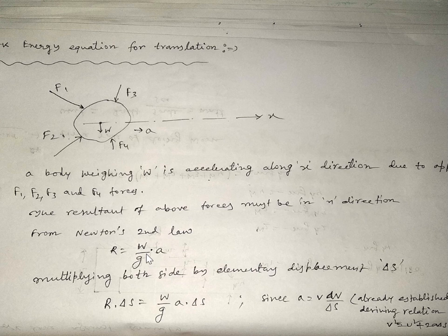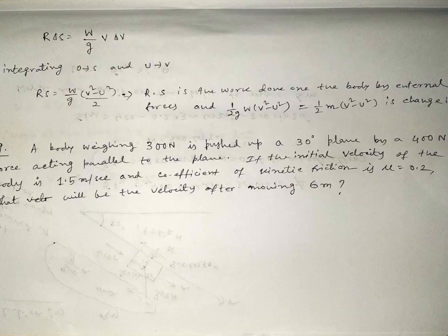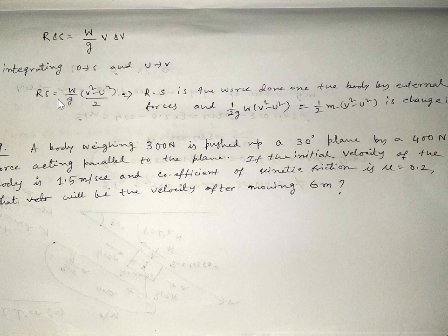Multiplying both sides by the elementary displacement δs, we get R·δs = (W/g)·a·δs. Using the kinematic relation a = v·dv/ds, we replace a·δs with v·dv. Integrating both sides — the left side from 0 to s, the right side from initial to final velocity — we obtain R·s = (W/g)·(v₂² − v₁²)/2. Here R·s is the total work done on the body, and the right side is the change in kinetic energy. Therefore: total work done on the body equals the change in kinetic energy.